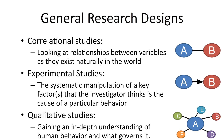Correlational research doesn't tell you all that much — it only tells you that two variables may or may not have a relationship, but doesn't explain what that relationship means. If you want to understand what that relationship means, you need to do an experimental study. This involves the systematic manipulation of a key variable that the investigator thinks is causing change in a behavior. If you can demonstrate that factor A causes a change in factor B, you've identified a causal relationship — something correlational studies just can't do.